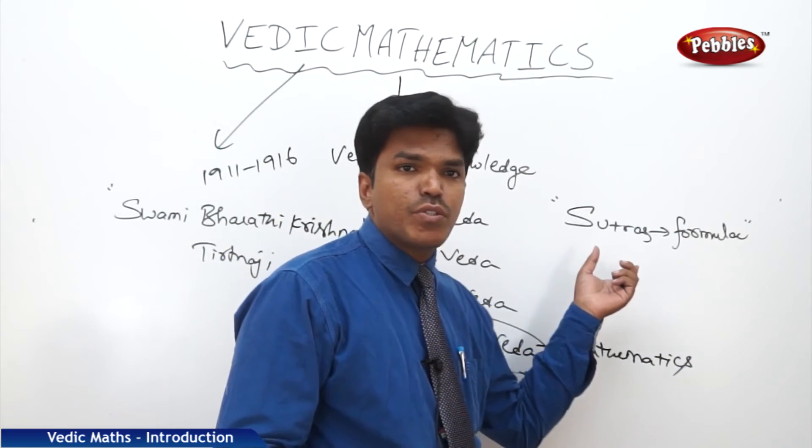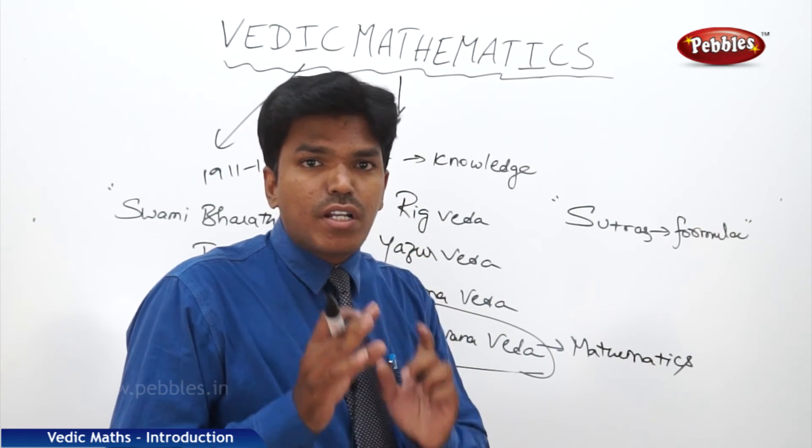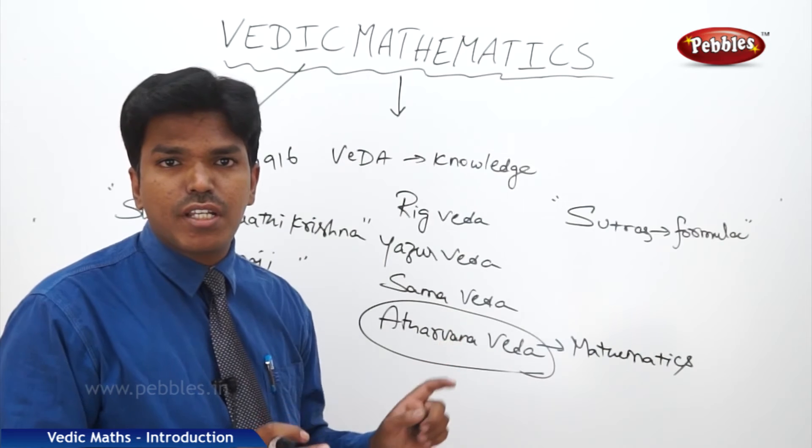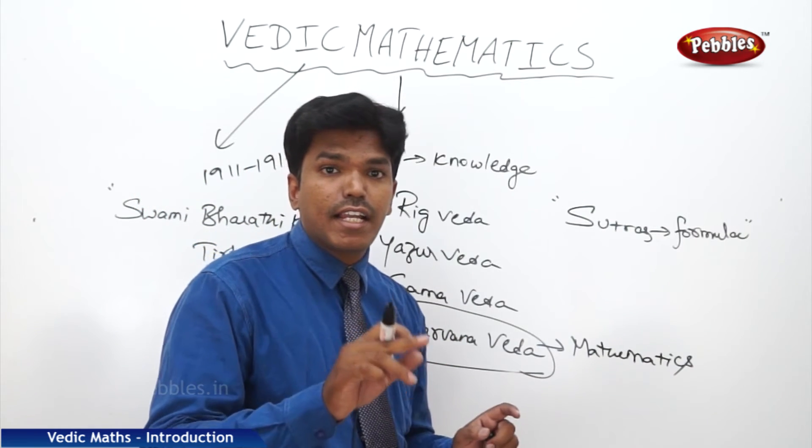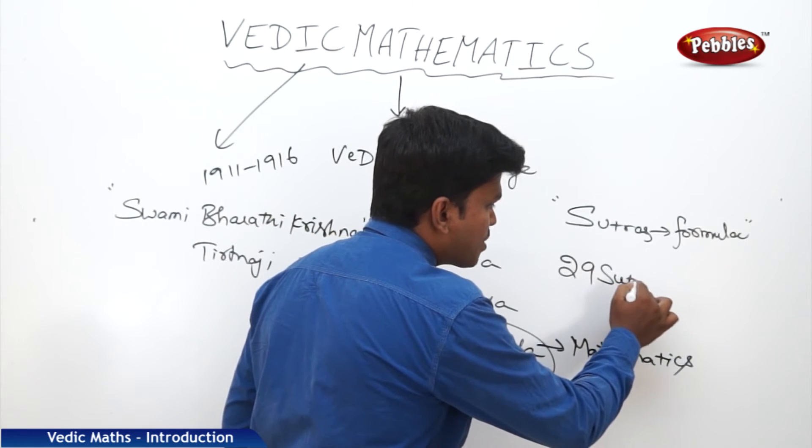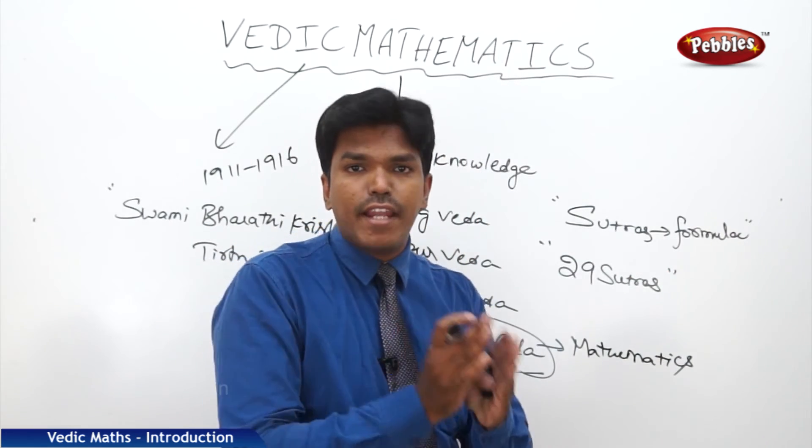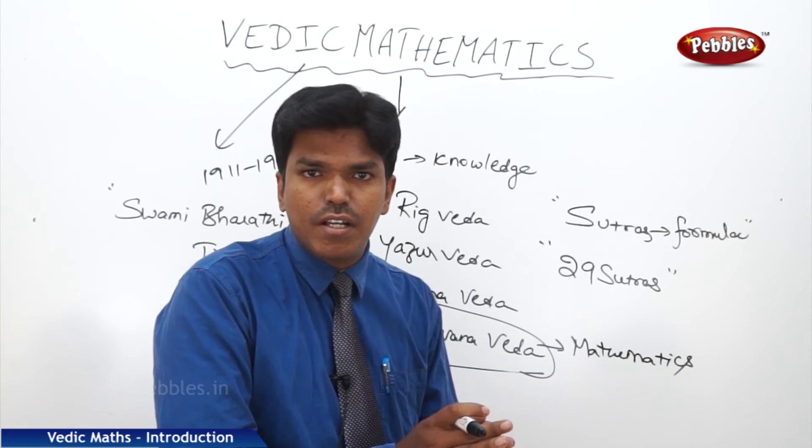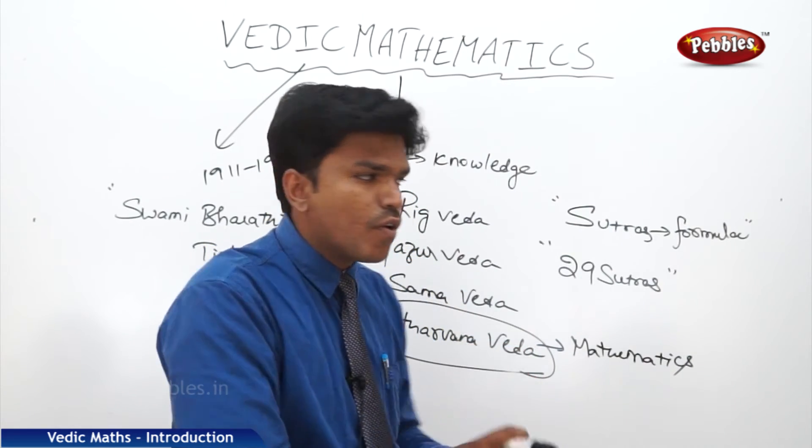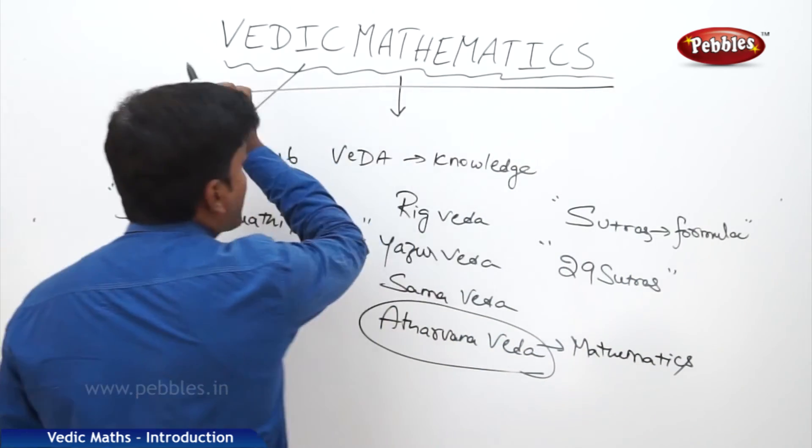What do you mean by sutra? Sutra means formulae. So what Swami Ji did between 1911 to 1916? He went into deep meditation and he recollected 29 sutras, that means 29 formulas. And he gave a name to this concept, to these 29 sutras and their application as Vedic Mathematics.